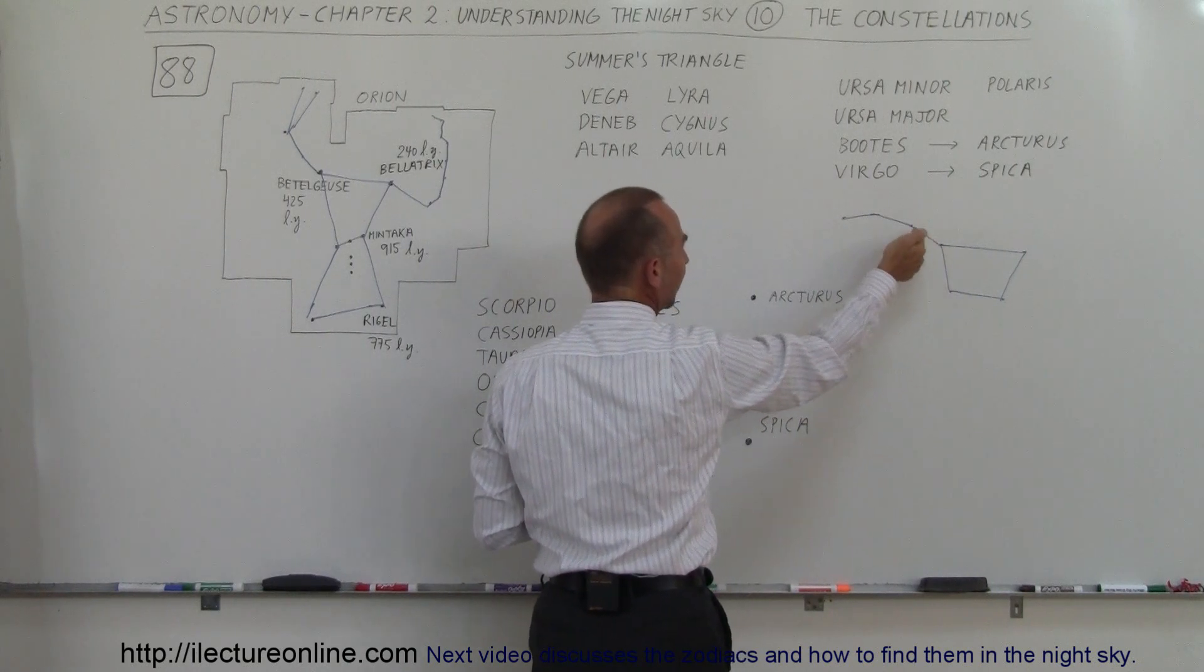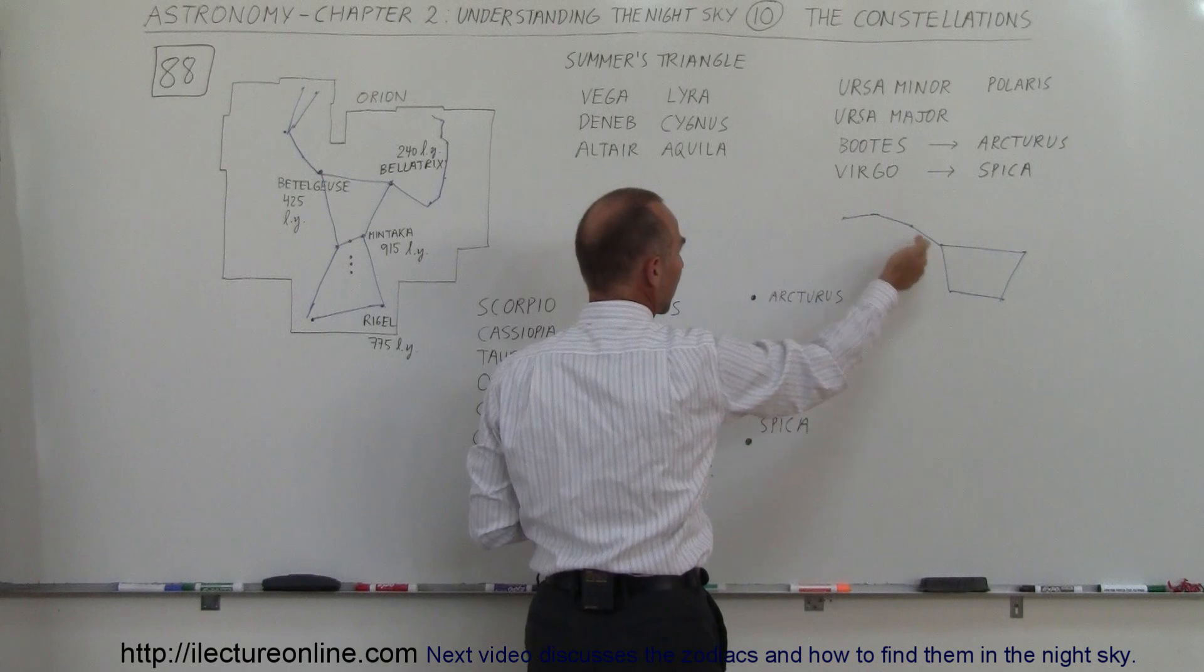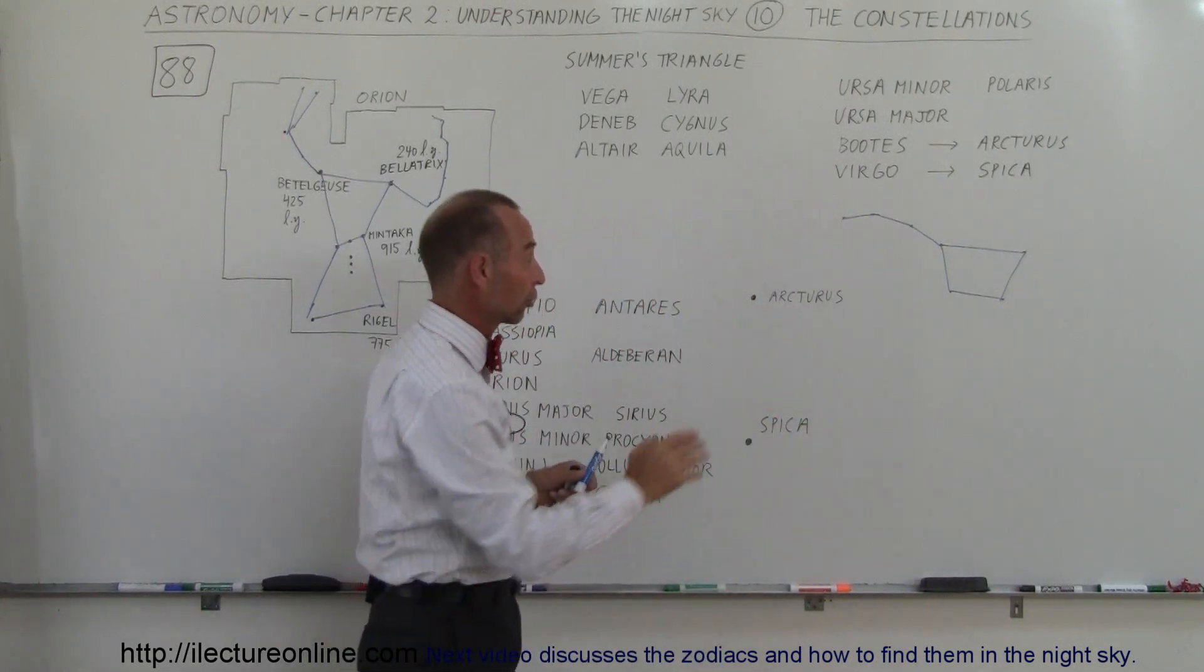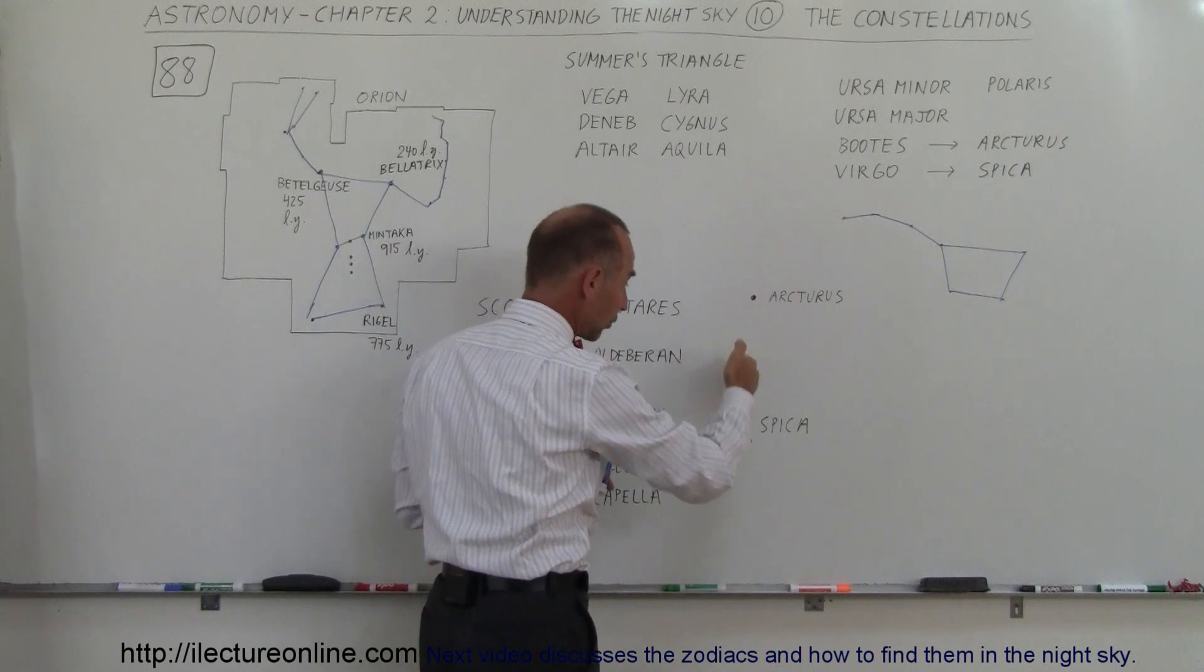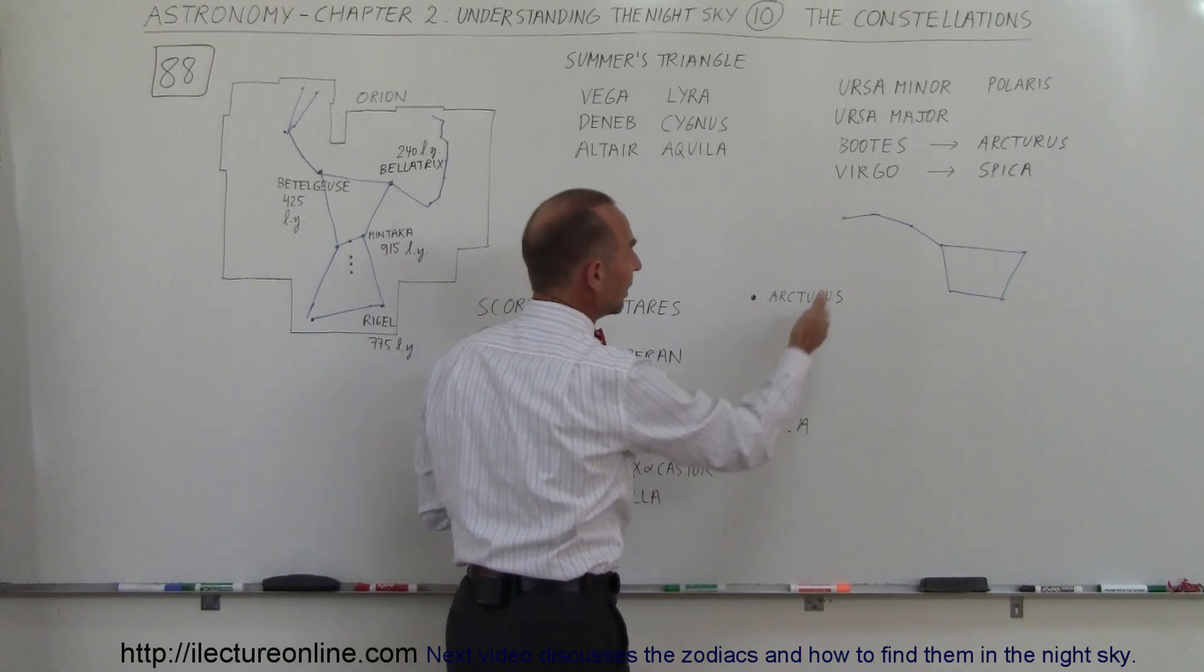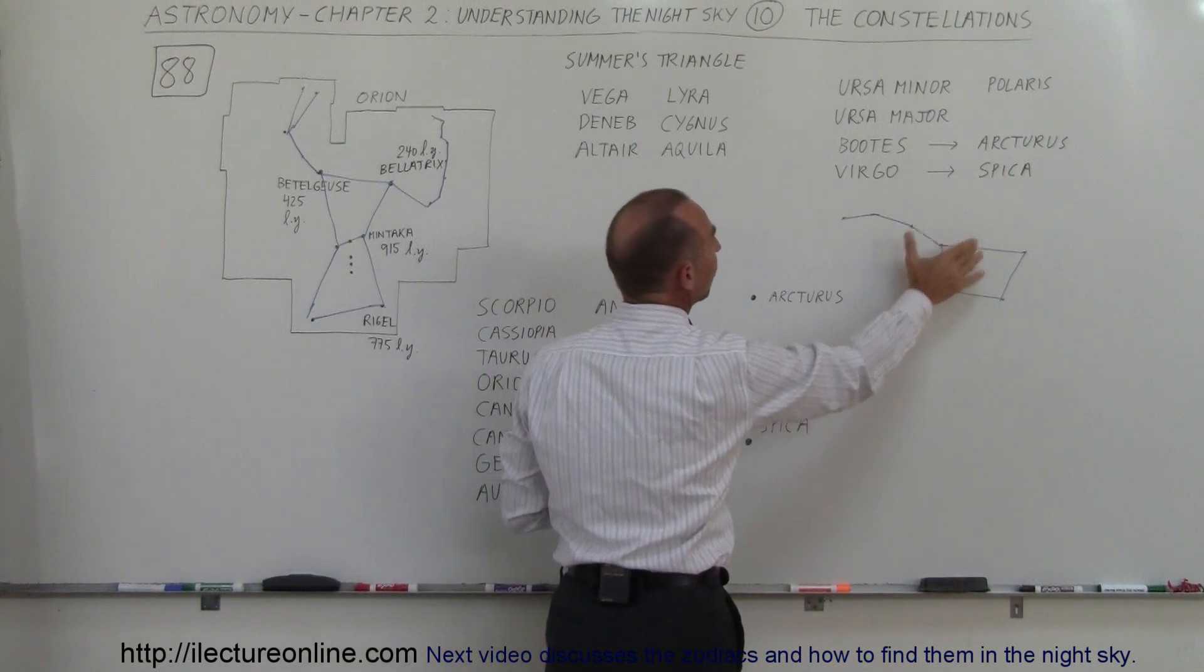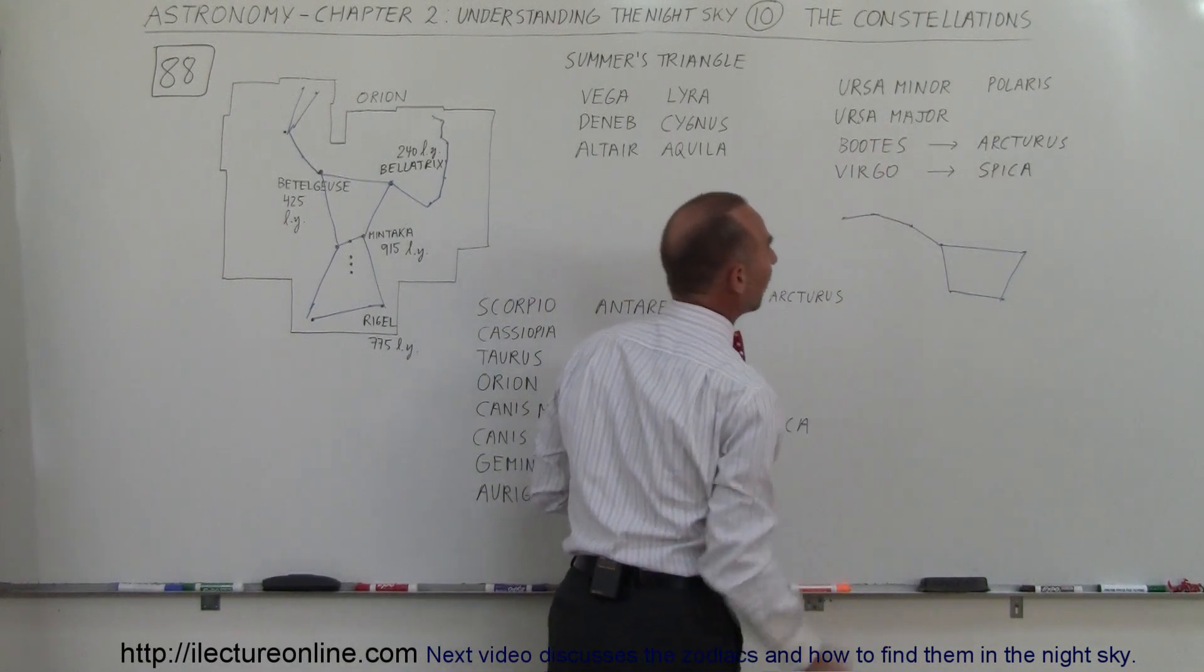If you follow the arc, about one and a half times the length of the arc right here, you get to a very big star, a reddish looking star called Arcturus. And then if you continue the arc over here, you look at a more whitish looking star called Spica. Here is how you find Arcturus and Spica based on the Big Dipper, which allows us to find Boötes and Virgo.